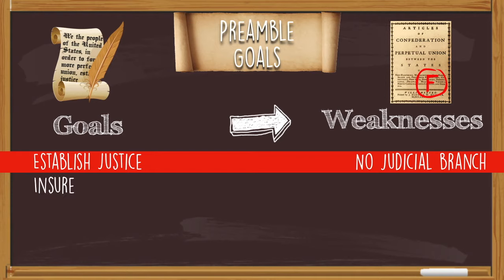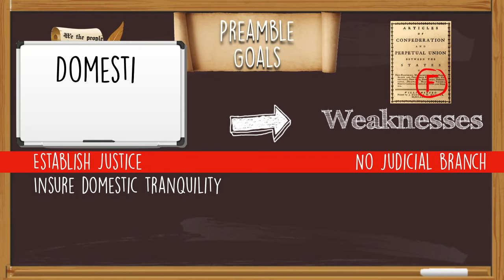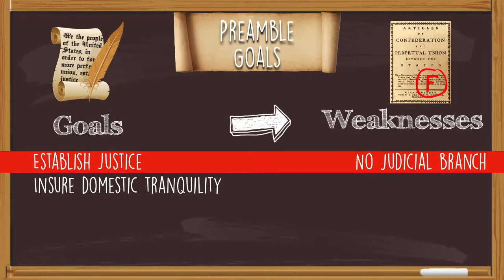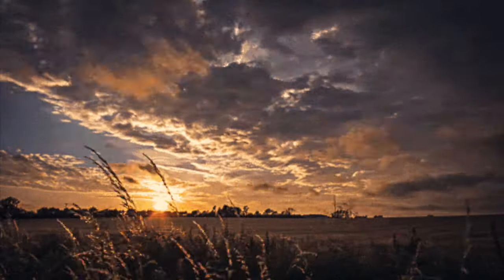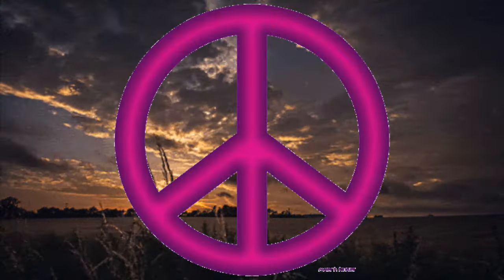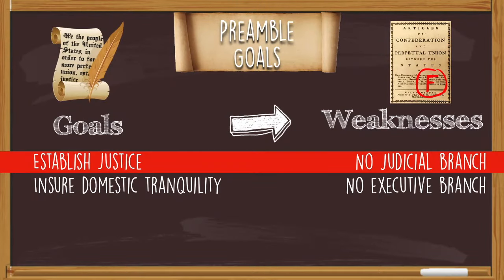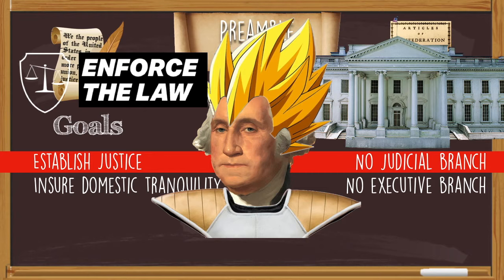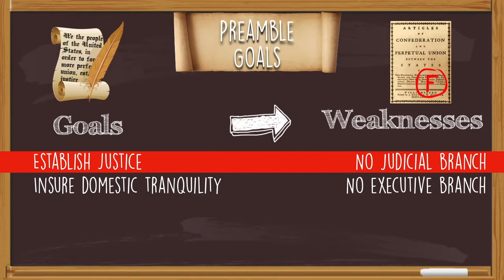The next goal in the preamble is to ensure domestic tranquility. Domestic means in our own country, and tranquility means being peaceful. So the goal is to make sure that we have peace at home. The weakness the preamble is referring to is that there was no executive branch — no president under the Articles of Confederation, no one to lay down the law and make sure people are following it. So the Articles had no president and no Supreme Court. I wonder why it failed.